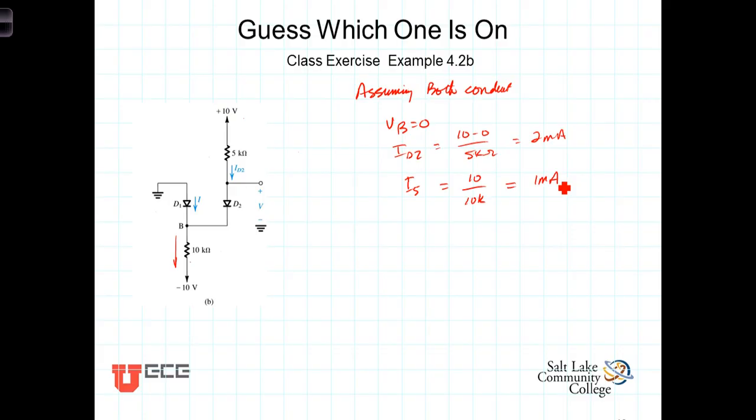All right, given our assumptions that both are conducting, if I've got 2 milliamps coming down here and only 1 milliamp going here, that would require 1 milliamp going in that direction, but this diode does not conduct in that direction. This diode is connected to conduct only in this direction. Therefore, because I sub D would need to be a negative 1 milliamp, this assumption is not correct.